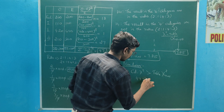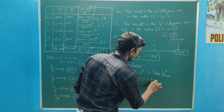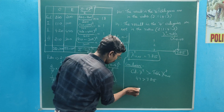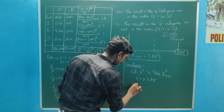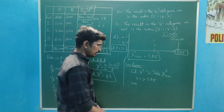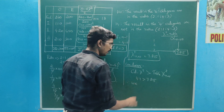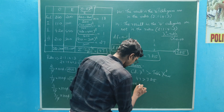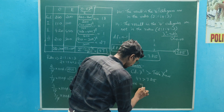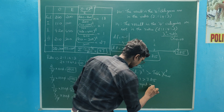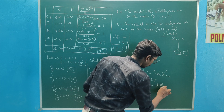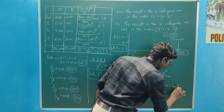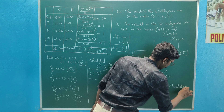47 is greater than 7.815. So therefore, we reject H0 at alpha equal to 5% level of significance.